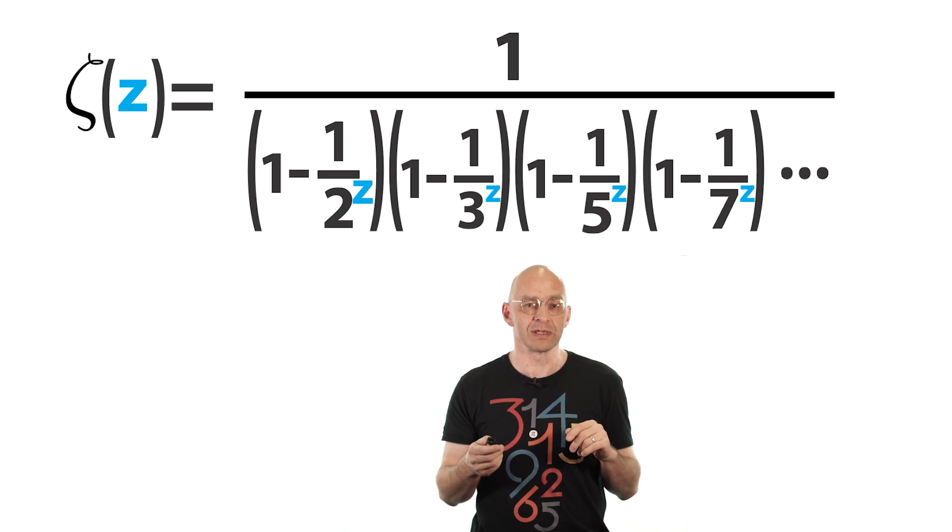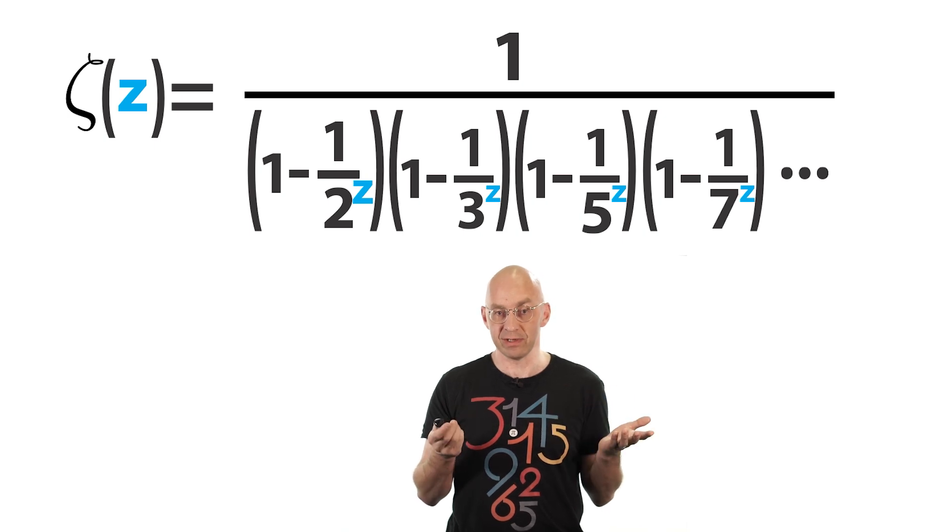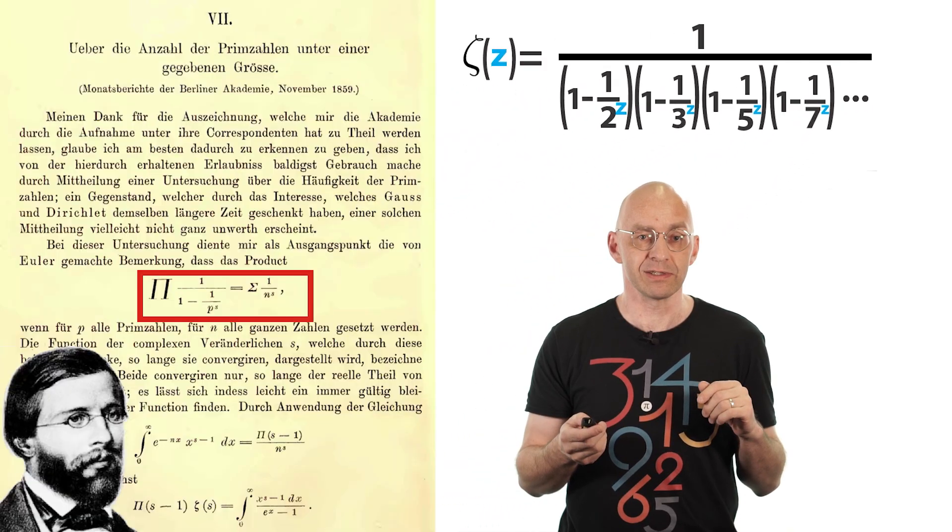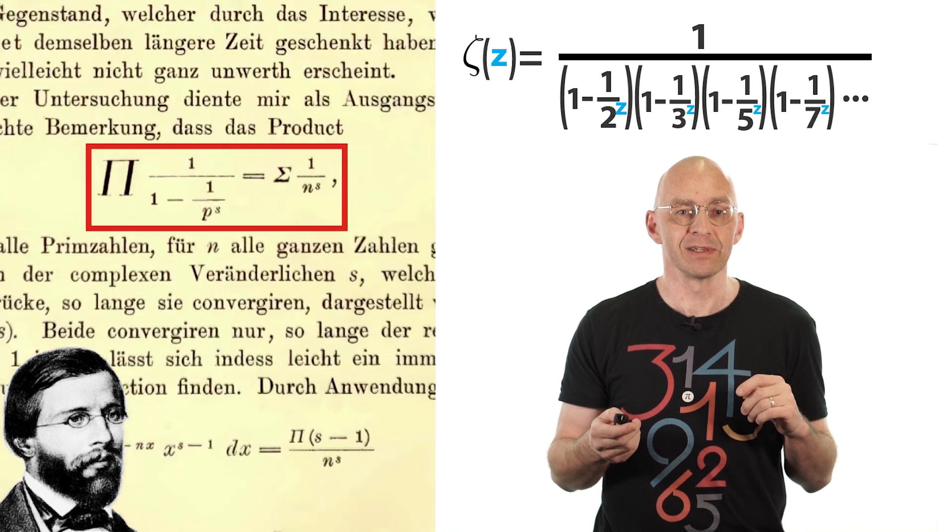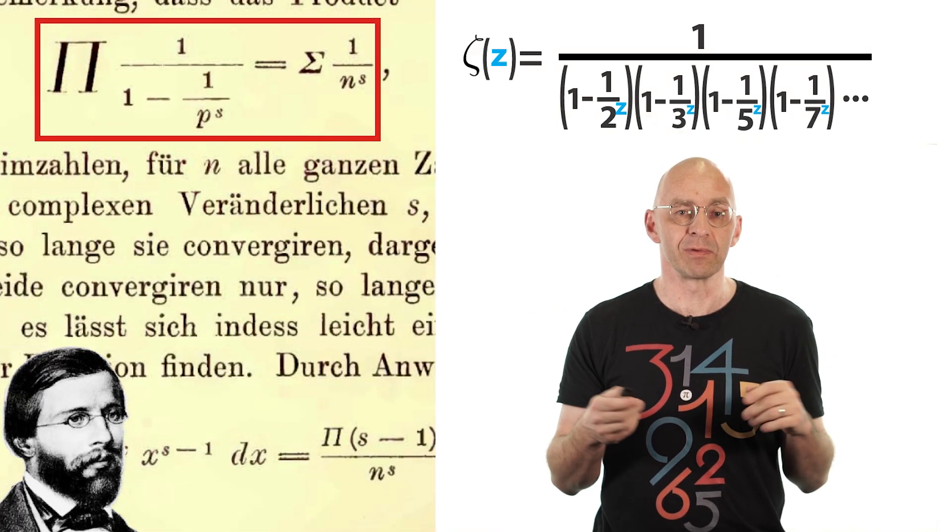Now this identity is one of the biggest deals in mathematics and it's the point of departure for the famous paper in which Bernard Riemann states the Riemann hypothesis. So let's just have a quick look at this. There it is, all in German. So let's zoom in a bit. So there it is, right? That's exactly what we have there, just written in a little bit more compact way.